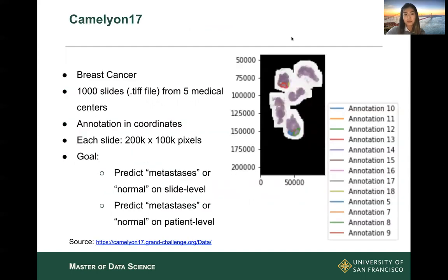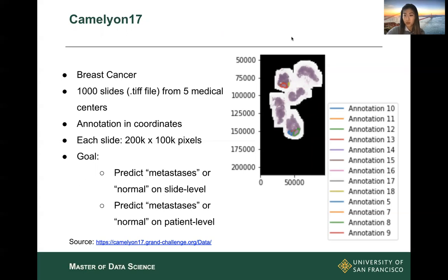I've been working on two datasets: Camelyon 17 and Panda Challenge. Camelyon 17 is a set of pathology slides of breast cancer. There are 1,000 slides from five medical centers. The annotations are labeled by doctors telling us the coordinates of the cancer cells. We can then use SliceSlicer to map the detected cancer cells based on the coordinate system. All the color marks on the right image are the coordinates from the XML file that doctors annotated, mapped onto the original slide.